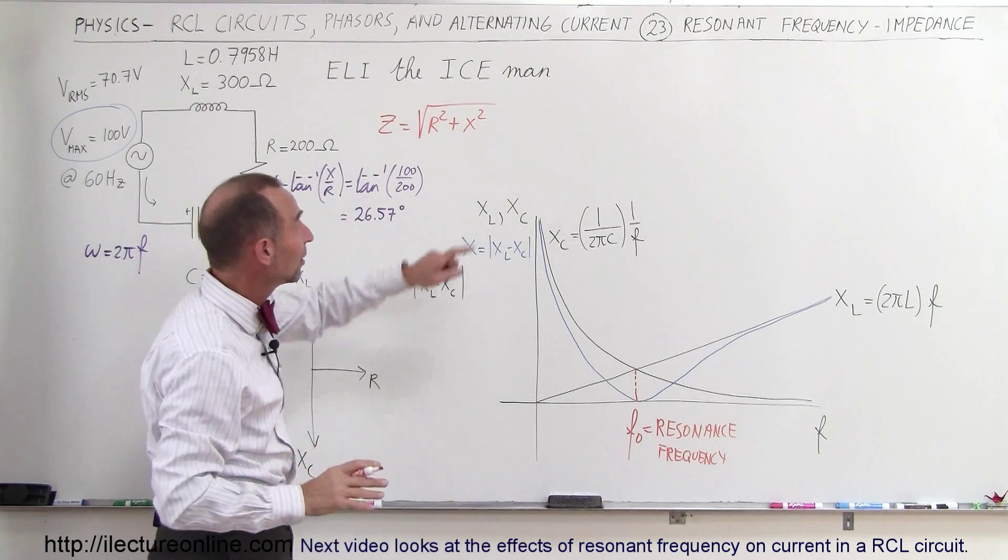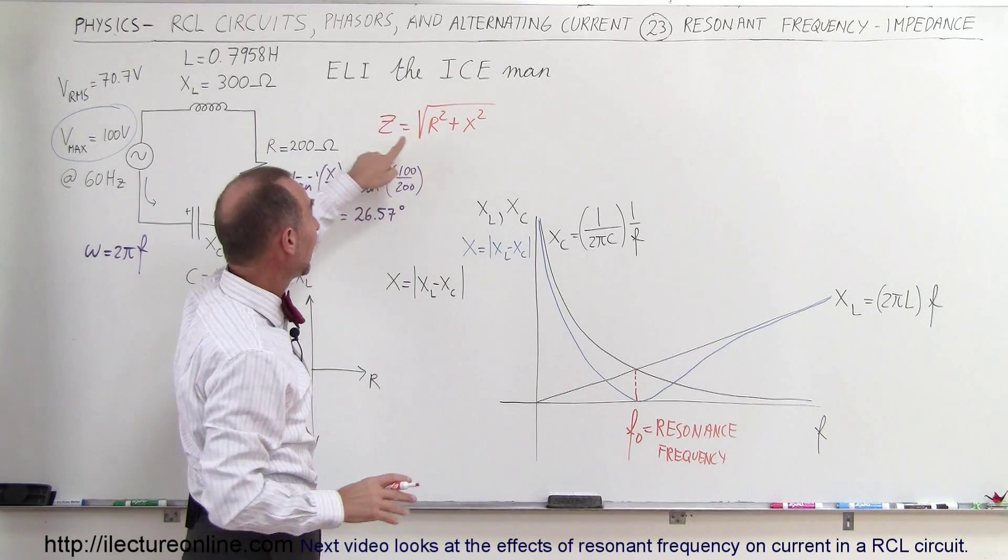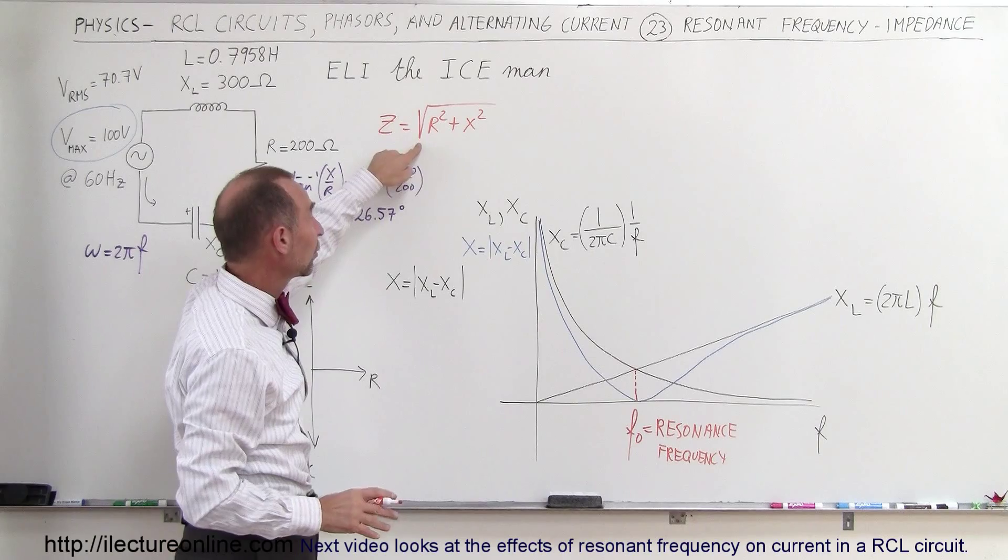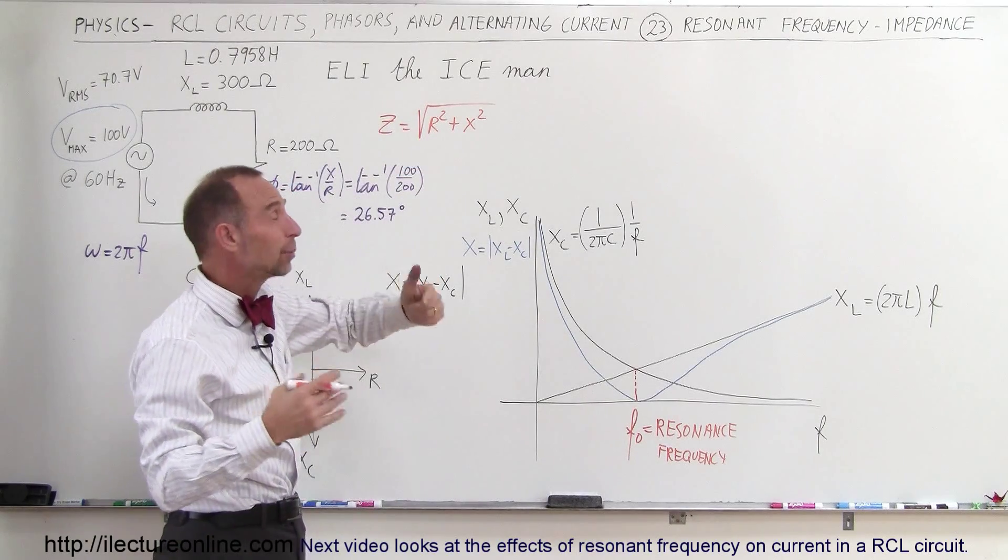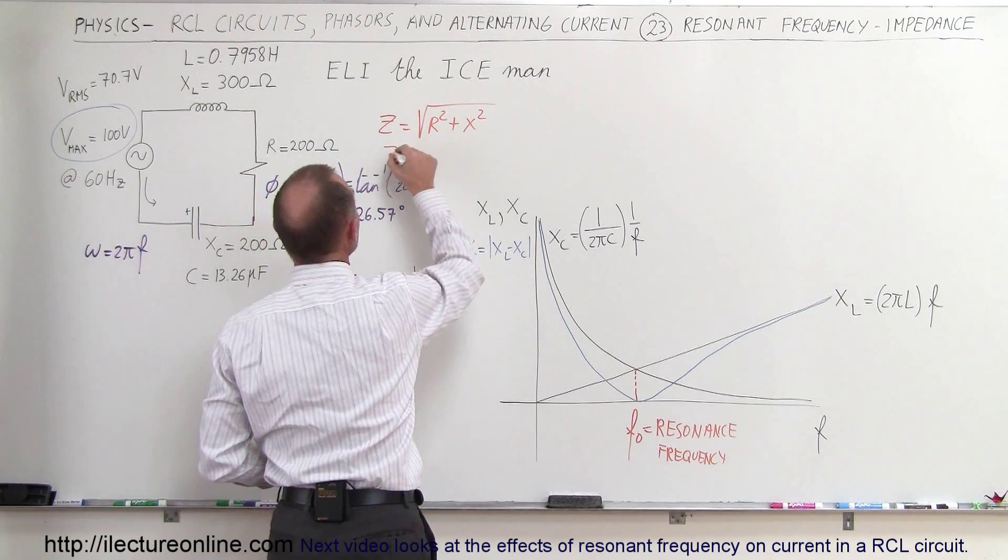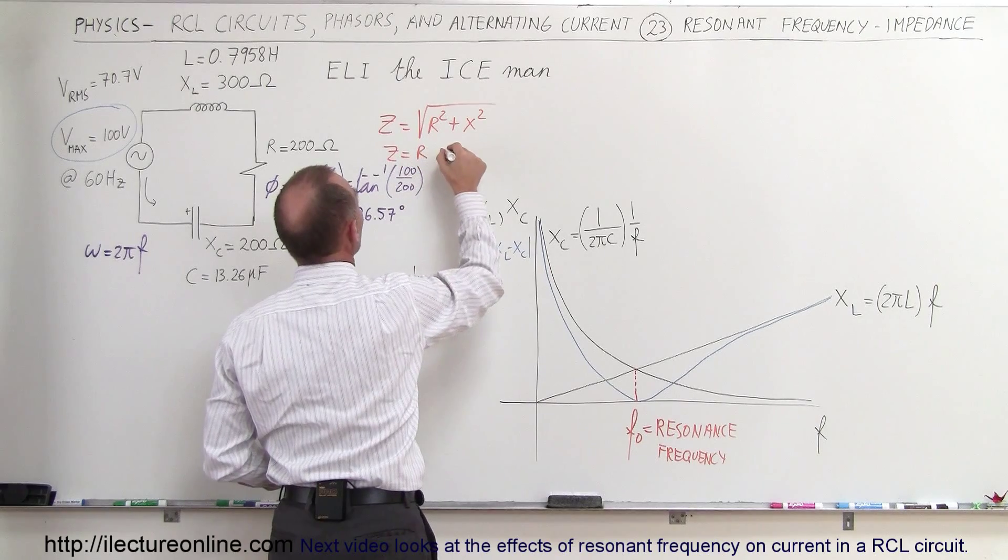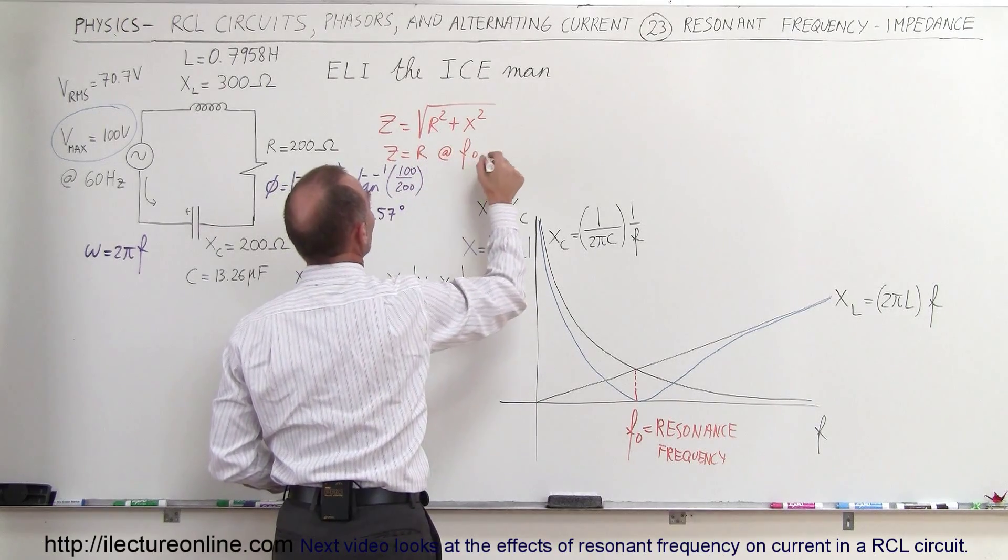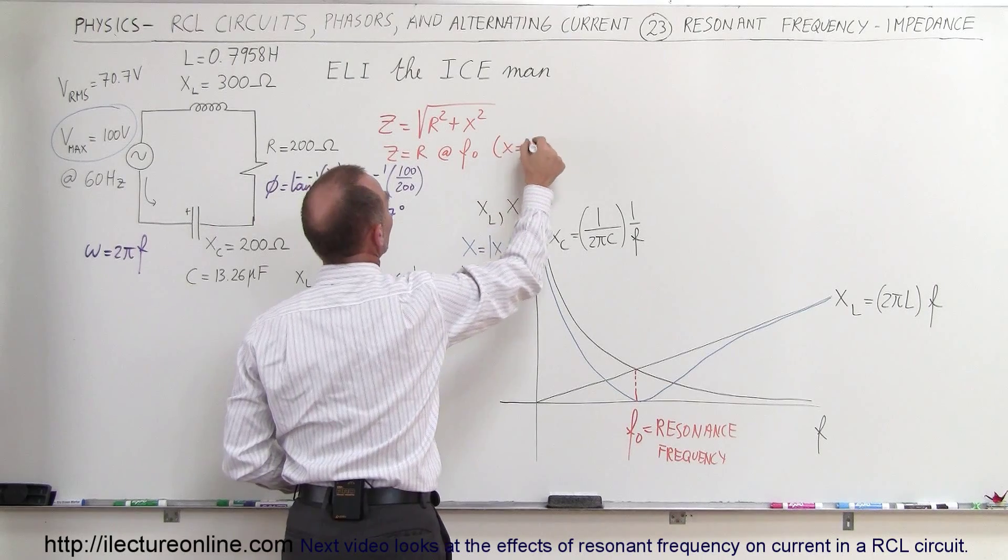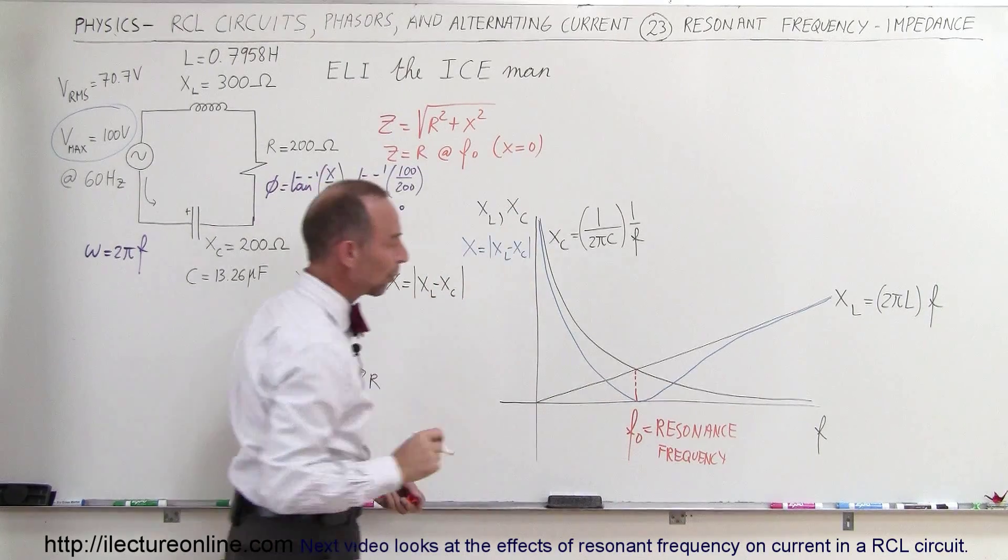And so we know that at resonance frequency the reactance goes to zero and the impedance then becomes equal to the square root of r squared, so therefore simply equal to r. So we know that z equals r at f sub not, which means that x is equal to zero and that's what we find right there.